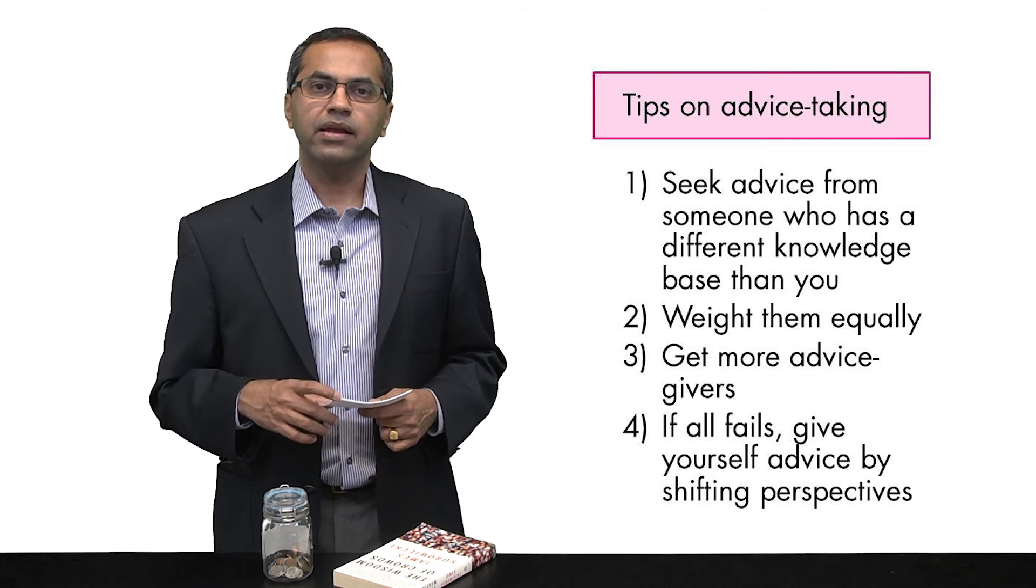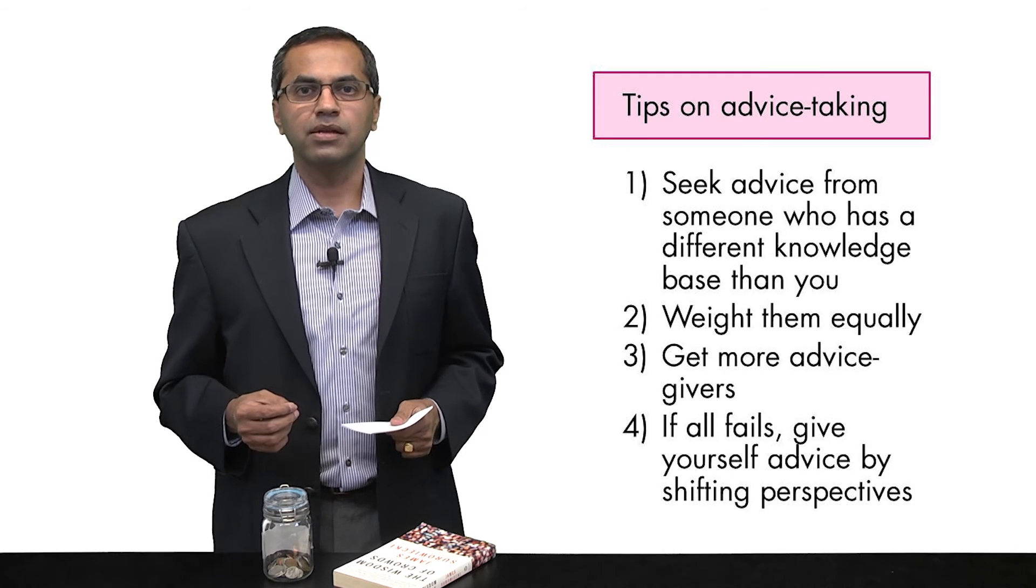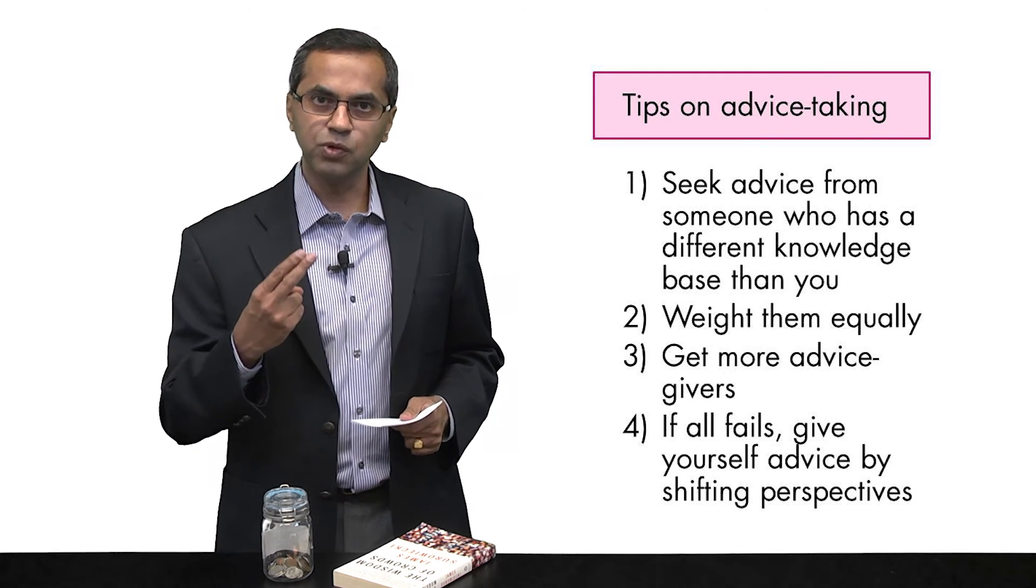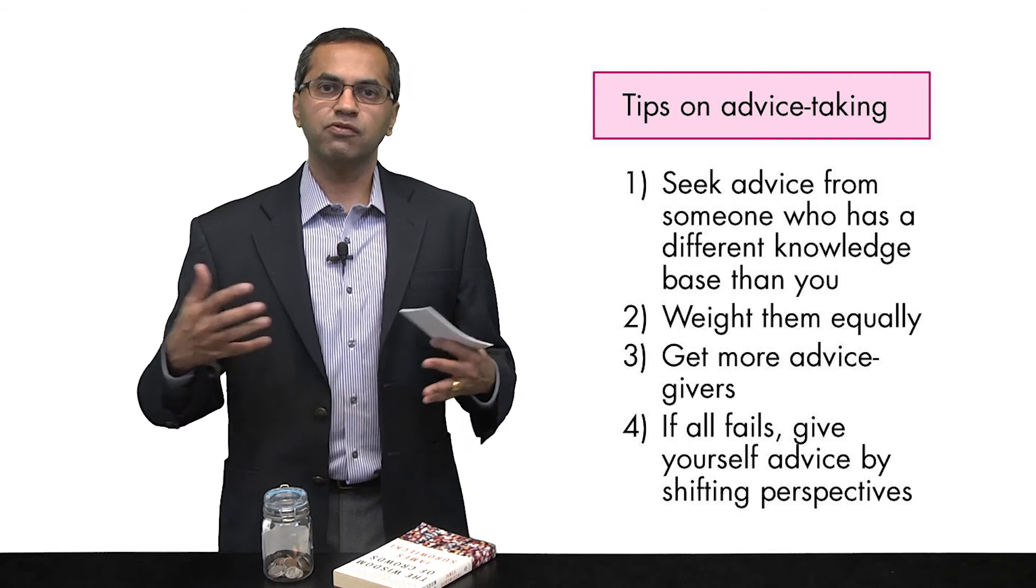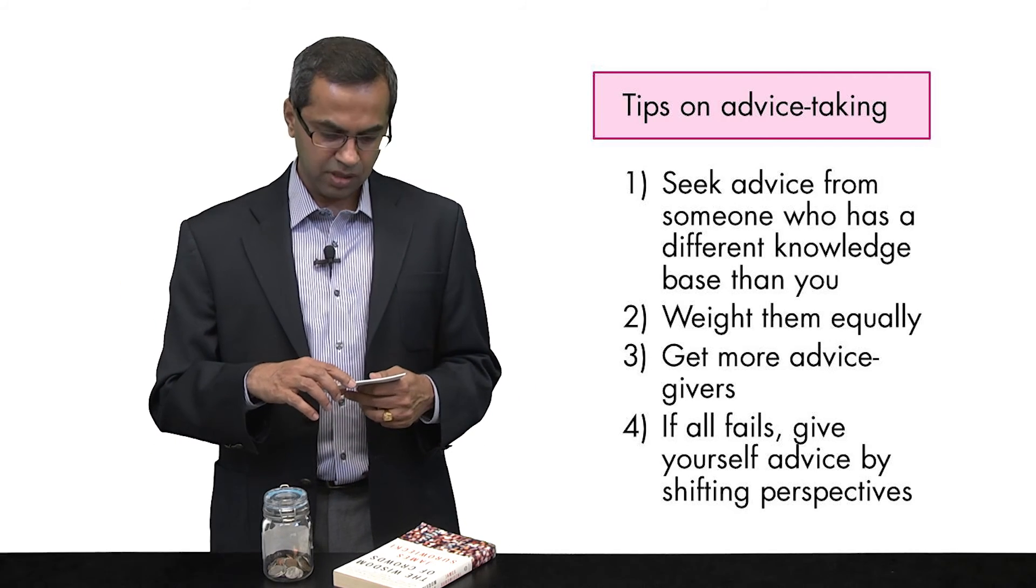Three, get advice from as many judges as you can. The phenomena of the average of two being better is only stronger when you put three, four, five or more judges. And finally, if you don't have access to advice, if you do not have anybody you can turn to, use yourself as a second person.